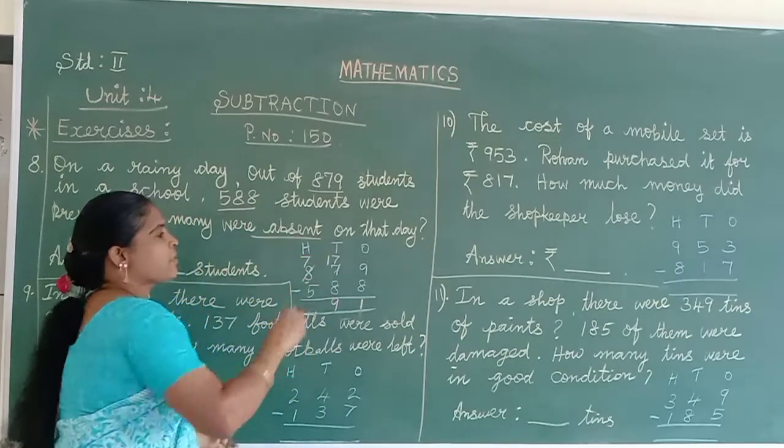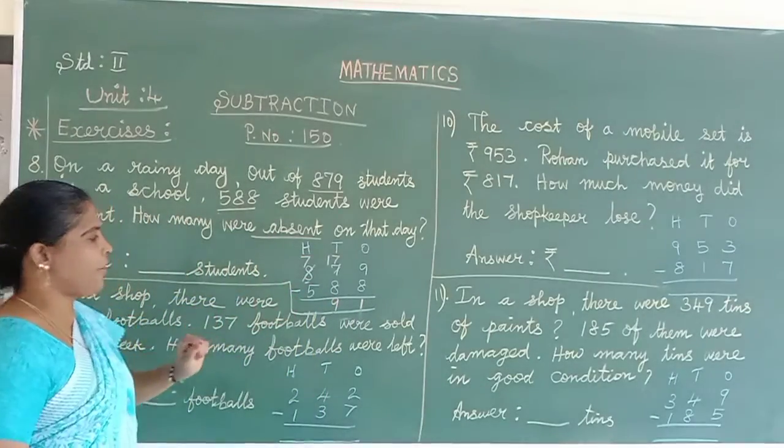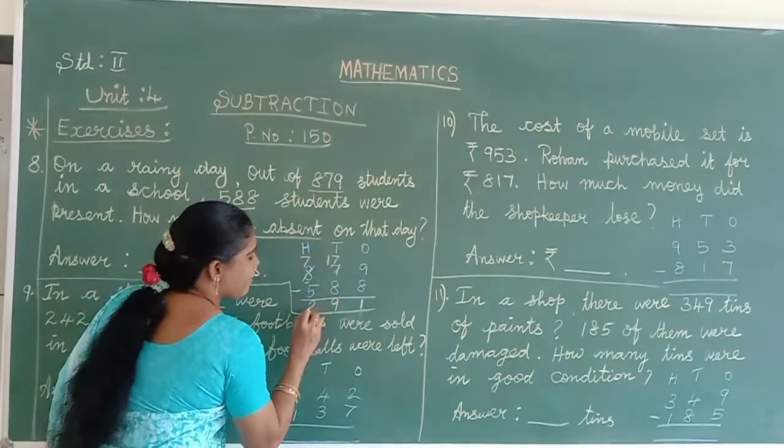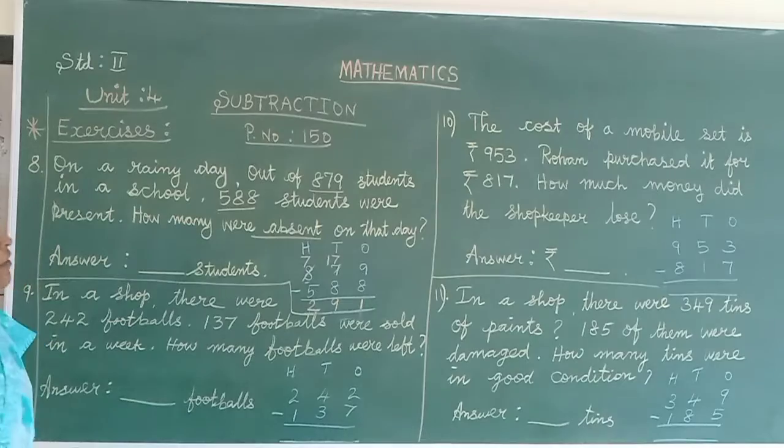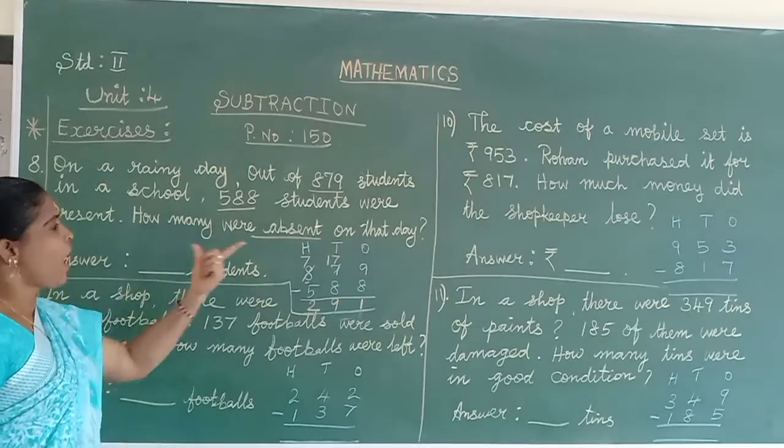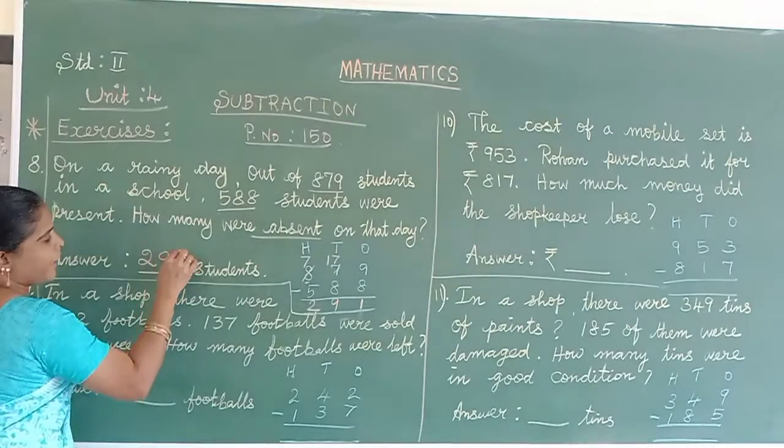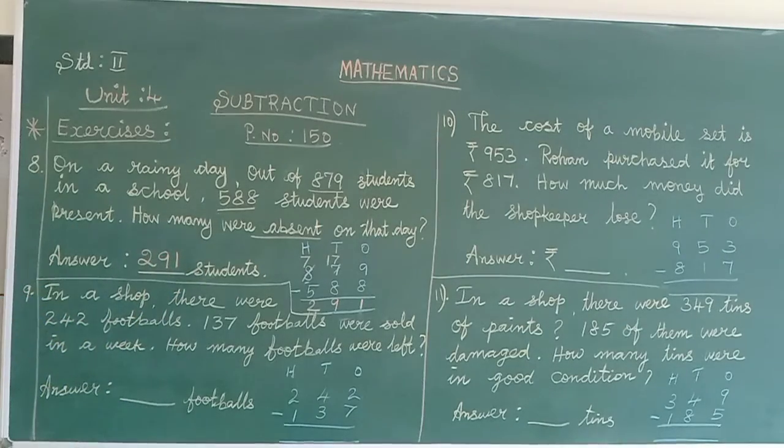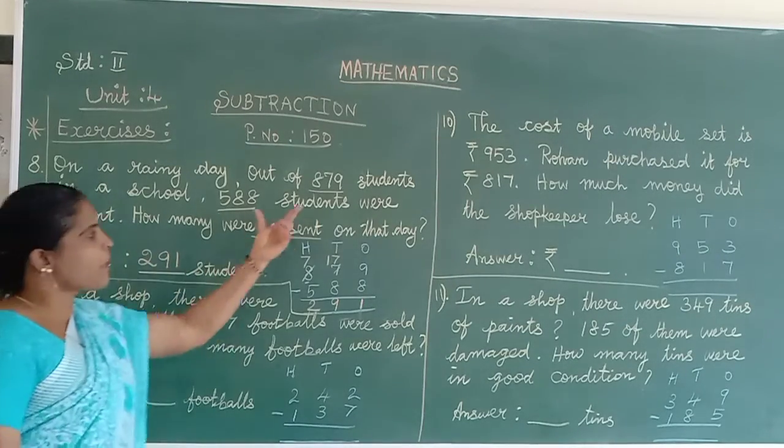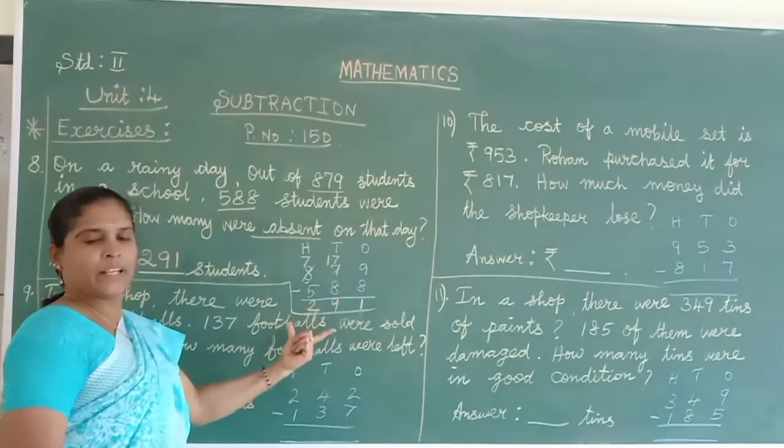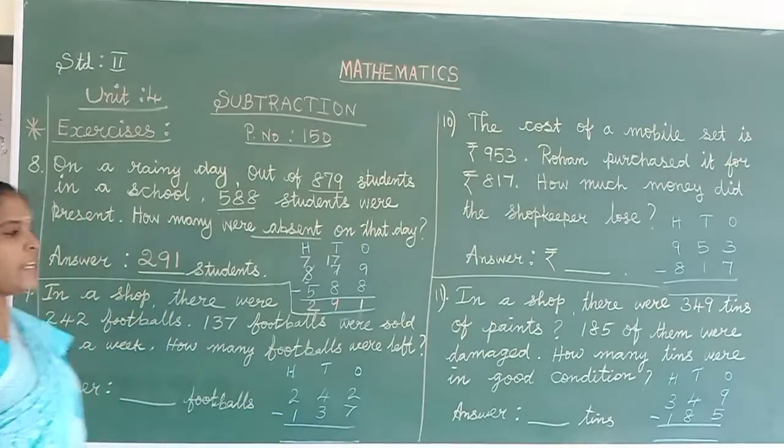And come to hundreds column: 7, 5. Bigger number is on top, no problem. 7 minus 5 equals 2. So how many students were absent that day? 291 students. You can write the total number on top, how many present below, and we find the absentees.